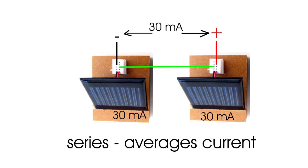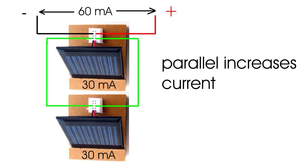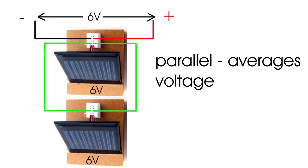To increase current, the panels must be connected in parallel, like this. This configuration basically doubles the current, but this time the voltage does not increase. It remains close to the average voltage of the two panels.